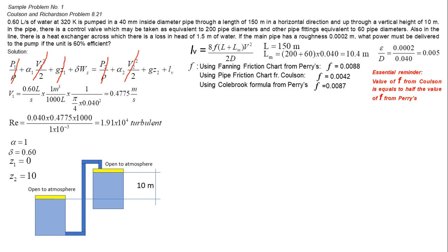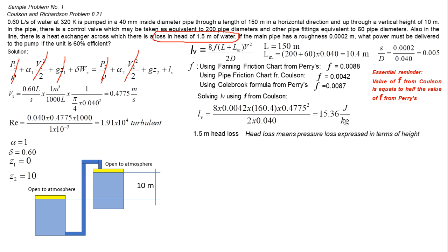Solving now for friction loss using the friction factor from Coulson. We're not done yet because there is still a 1.5 meter head loss stated in the problem. Head loss means pressure loss expressed in terms of height. To account for this pressure loss means that additional work is required and is to be supplied by the pump.